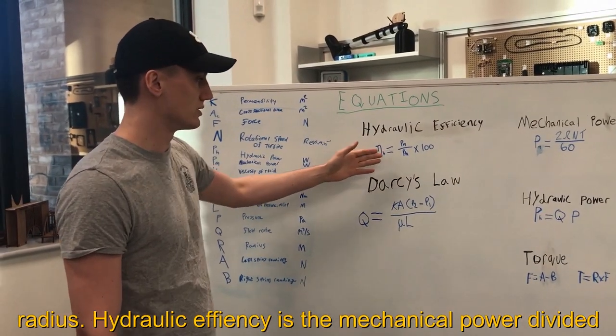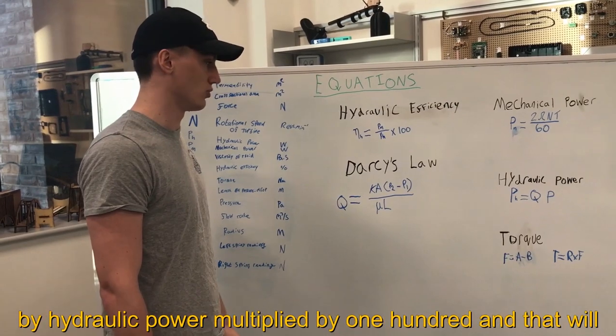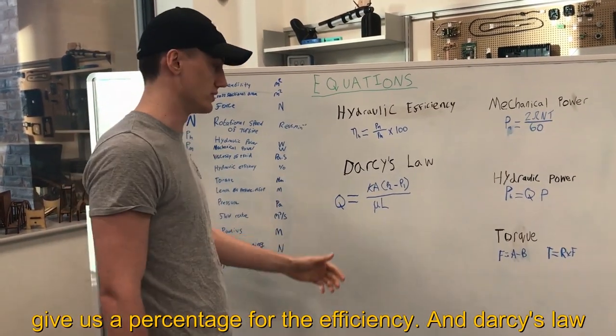Hydraulic efficiency is mechanical power divided by hydraulic power multiplied by 100 and that will give us a percentage of the efficiency.